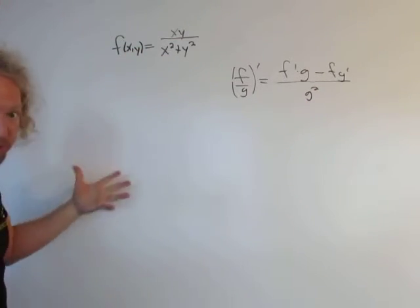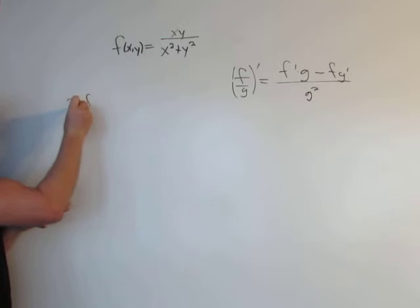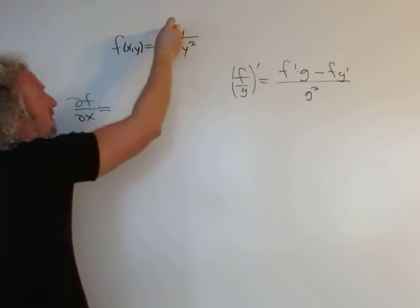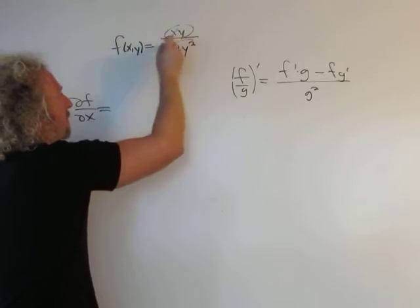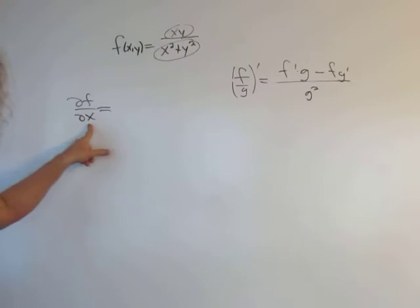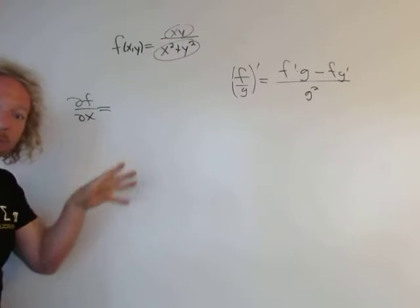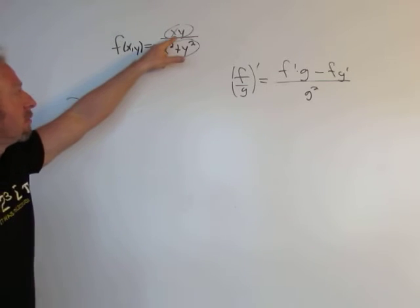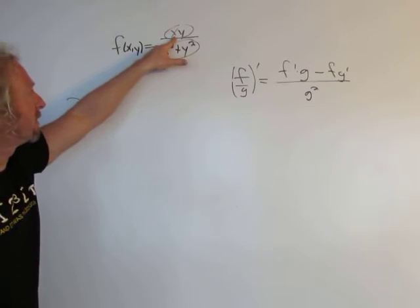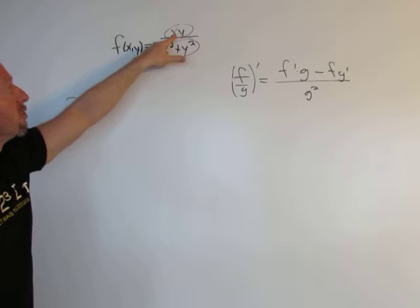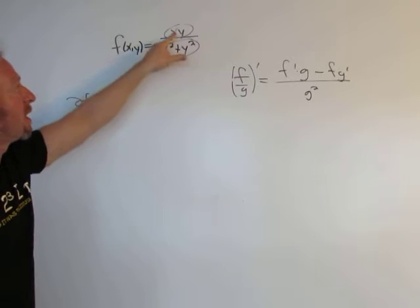So here when we take this derivative we're going to do the same thing. ∂f/∂x — this is our top piece and this is our bottom piece, first and second. When we're taking the derivative with respect to x, we're fixing all of the y's, treating y as constant.